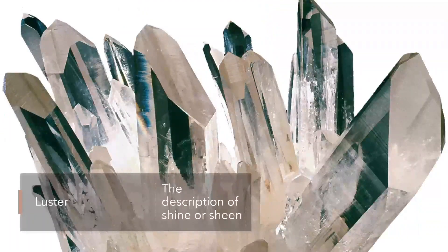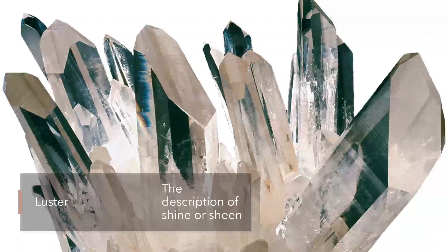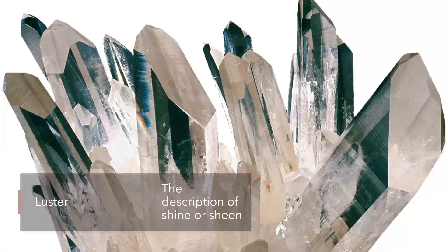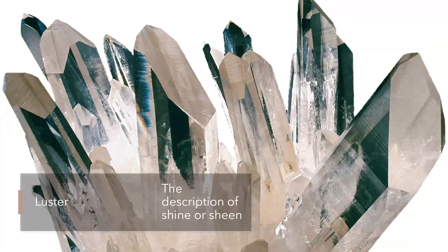We need to talk about luster. This is the particular sparkle or sheen a mineral's appearance has. There are a bunch of different lusters, but in this class we're going to focus on just four: vitreous, pearly, metallic, and earthy. This characteristic can be somewhat useful in identifying a mineral because every species of mineral will have the same luster.